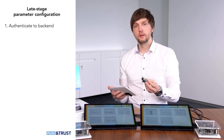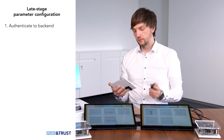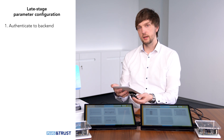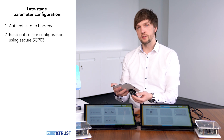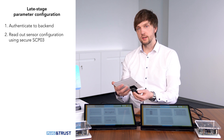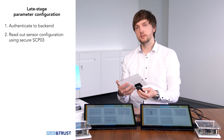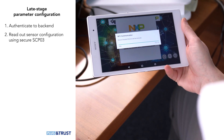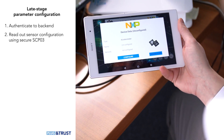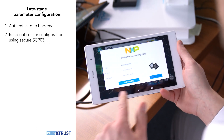Now we want to configure this specific sensor node to one of the two networks. For this, I first hold the sensor node to the tablet's NFC interface to read out the sensor information. This way, a secure connection is established between the SE050 on the sensor node and the secure backend. The backend will then send the information back to the tablet. We can now see that this is an SLI room meter that has not yet been configured.